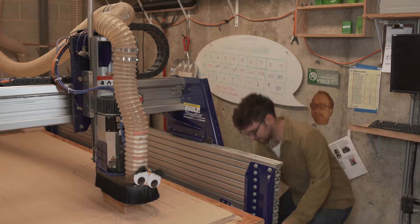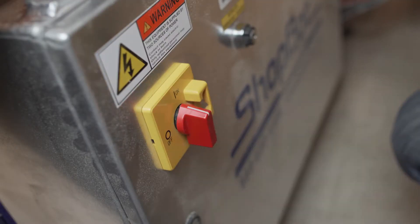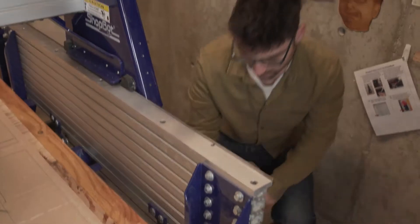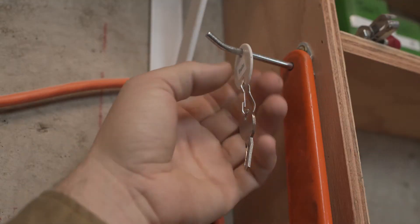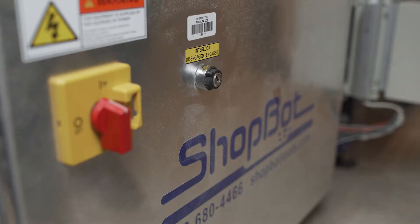Now turn on the ShopBot control box. You will hear another hiss. Grab the spindle interlock key and turn it on.